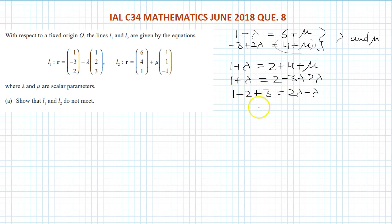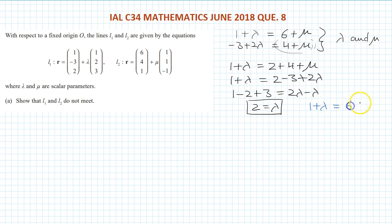Rearranging: 1 minus 2 plus 3 equals 2 lambda minus lambda, so 2 equals lambda, giving lambda equals 2. Substituting lambda equals 2 back into 1 plus lambda equals 6 plus mu: 1 plus 2 equals 6 plus mu, so 3 minus 6 equals mu, giving mu equals minus 3.